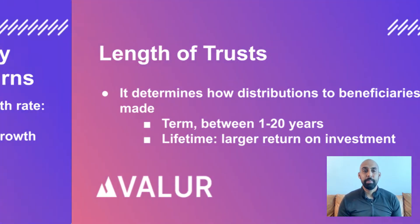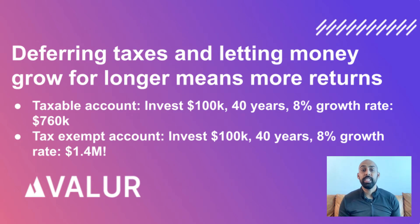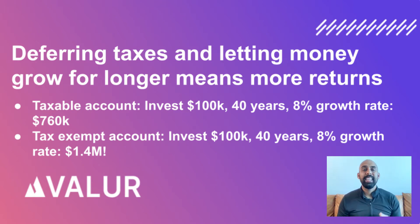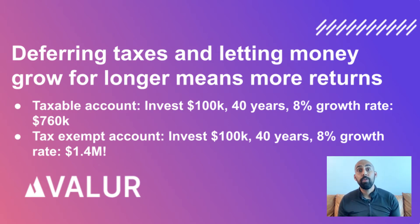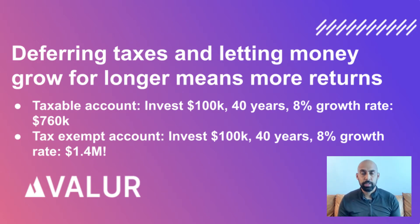So let's take a look at an example. If you invest $100,000 for 40 years in two accounts, and both accounts grow at an 8% growth rate — one account is tax exempt so you only pay taxes at the end of the structure, and the other account is taxed annually so you pay taxes every year — in the taxable account you'll have about $760,000 after 40 years. But in the tax-exempt account, you'll have about $1.4 million, or nearly double. As you can see, deferring your taxes can have a significant impact on creating wealth for yourself.